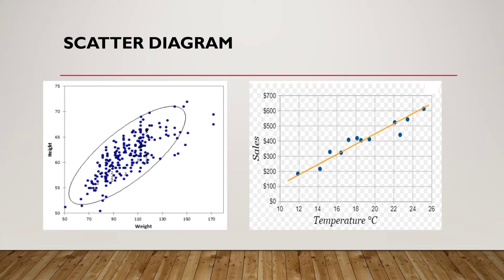On the second figure, we have temperature as the horizontal axis and sales on the vertical axis. We have some plots and they are close to a line, so you can see that it is linearly related.